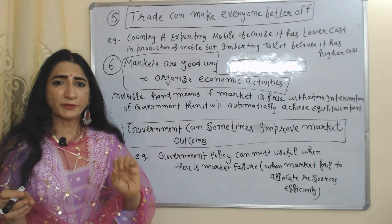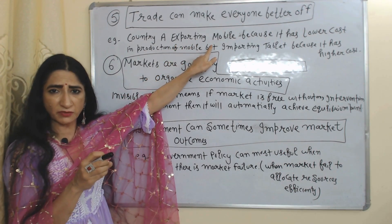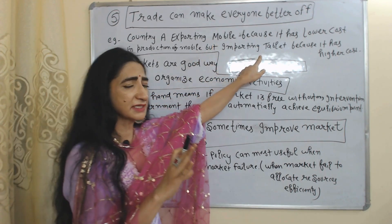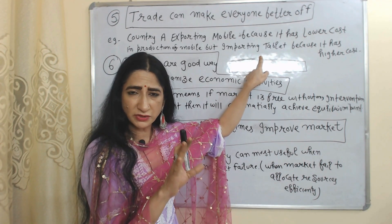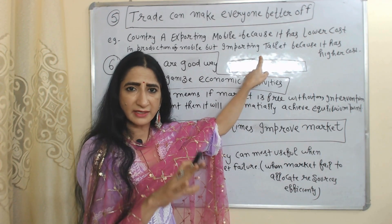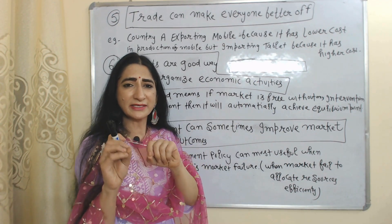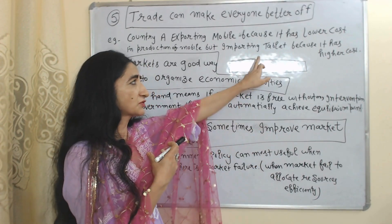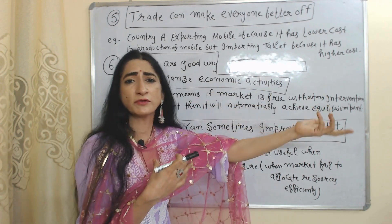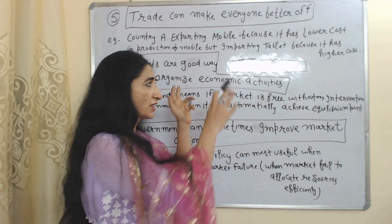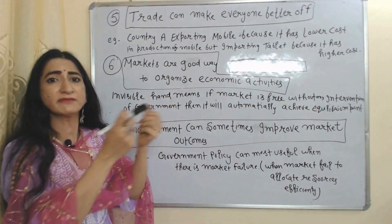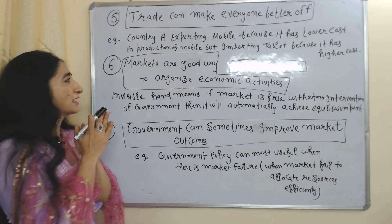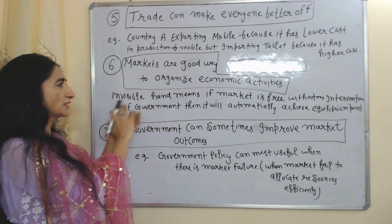The next principle is trade can make everyone better off, because trade allows countries to produce according to their expertise. For example, country A has expertise in production of mobile — the cost of mobile is very low in country A. But country A doesn't have expertise in production of tablet — the cost of tablet is very high. That's why country A decided to increase production and export of mobile and reduce production of tablet, and started importing tablet from another country. This shows how trade makes country A better off.